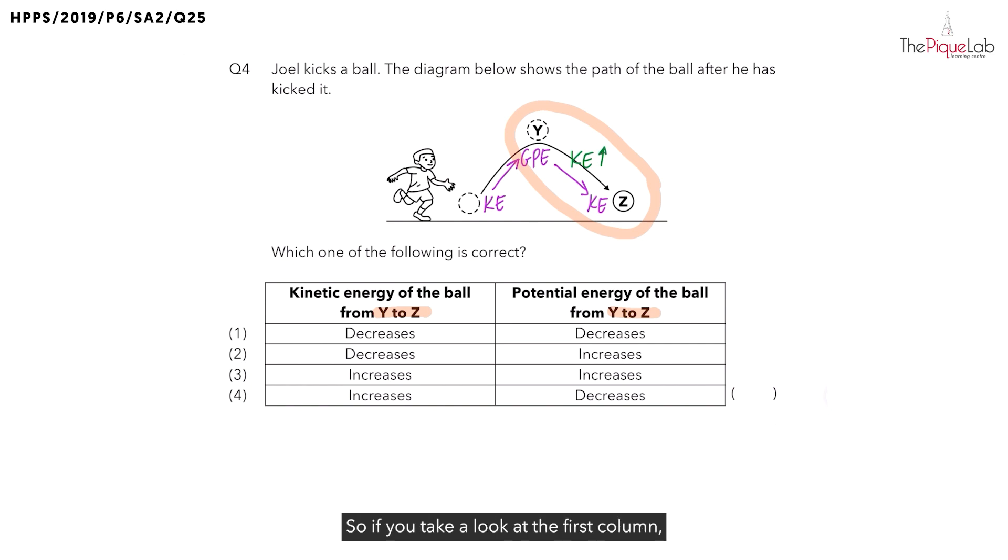So if we take a look at the first column, the kinetic energy of the ball should increase as it moves from position Y to Z. With that, we can eliminate option 1 and 2, leaving us with option 3 and 4.